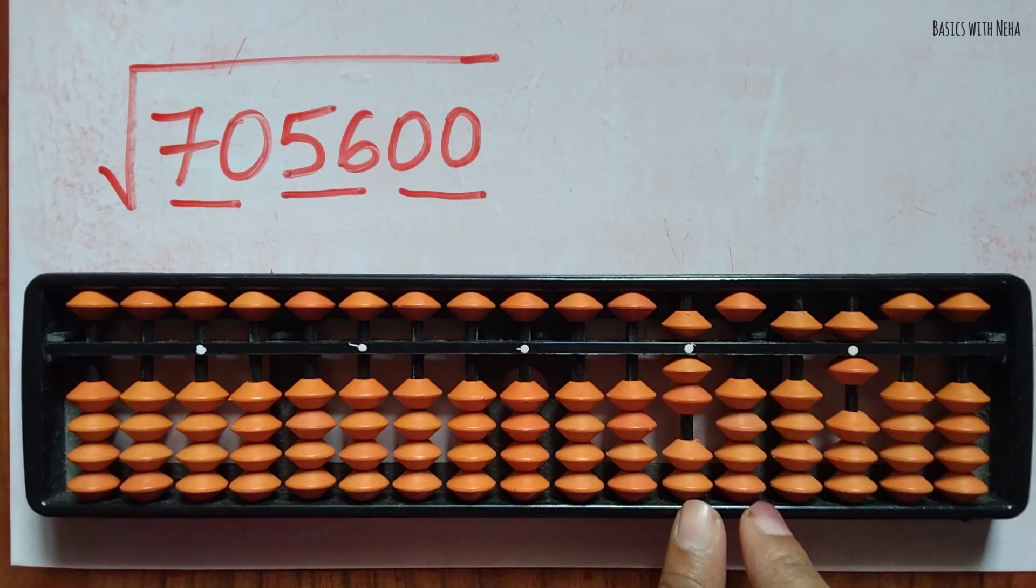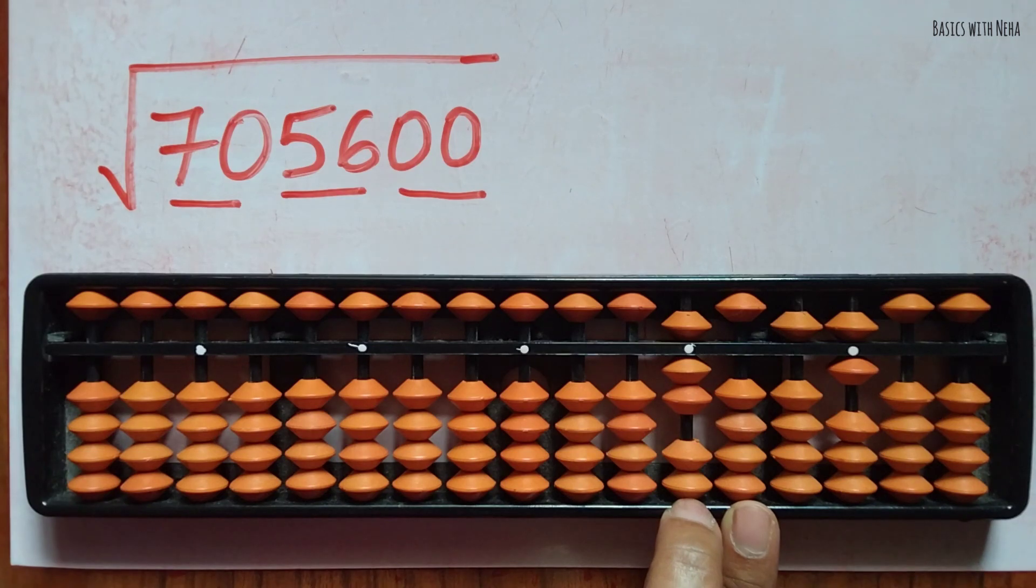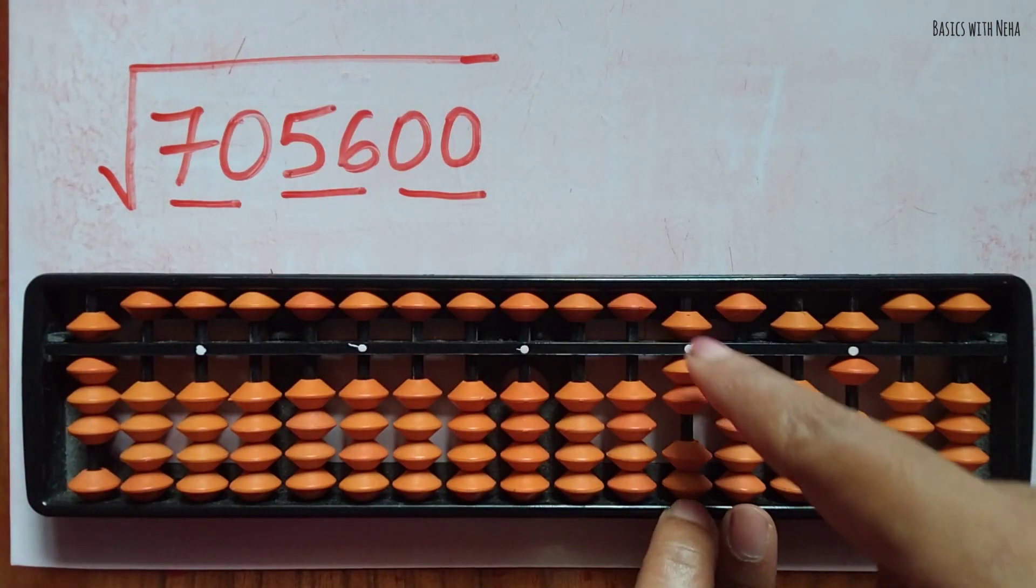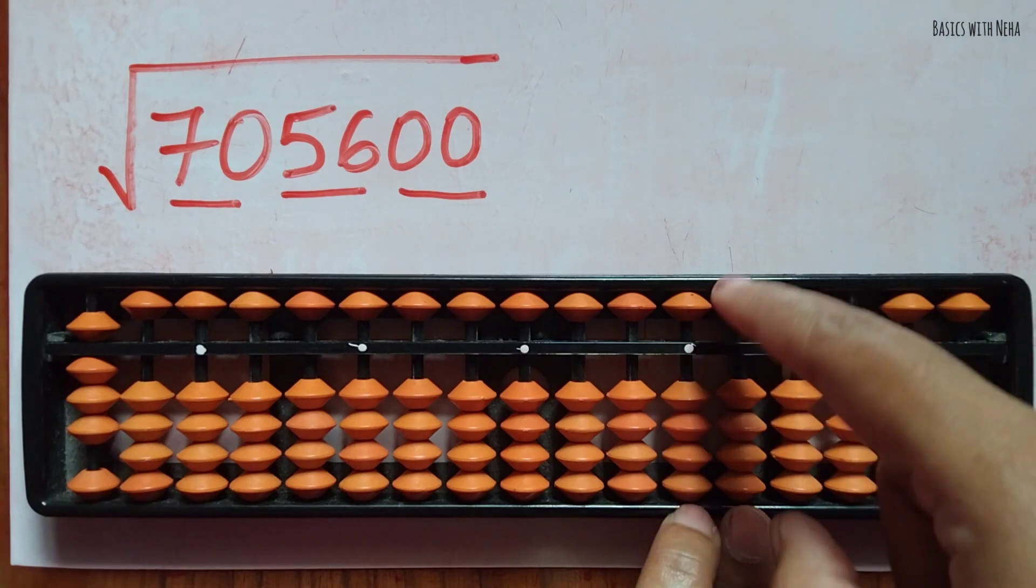Now we have to start from these two rods. The nearest number which is going to be squared and near to this number, that is 70, is 8. 8 squared is 64. Minus 6, minus 4.